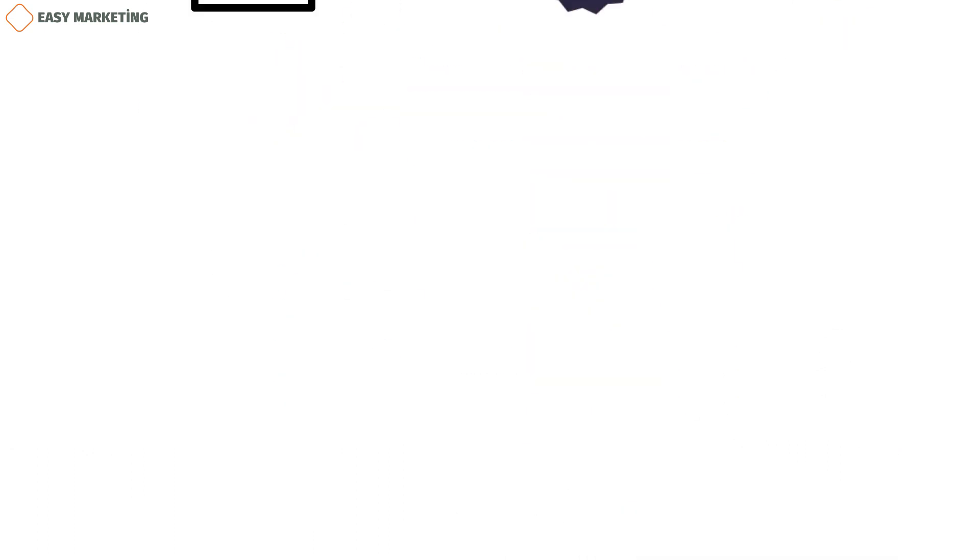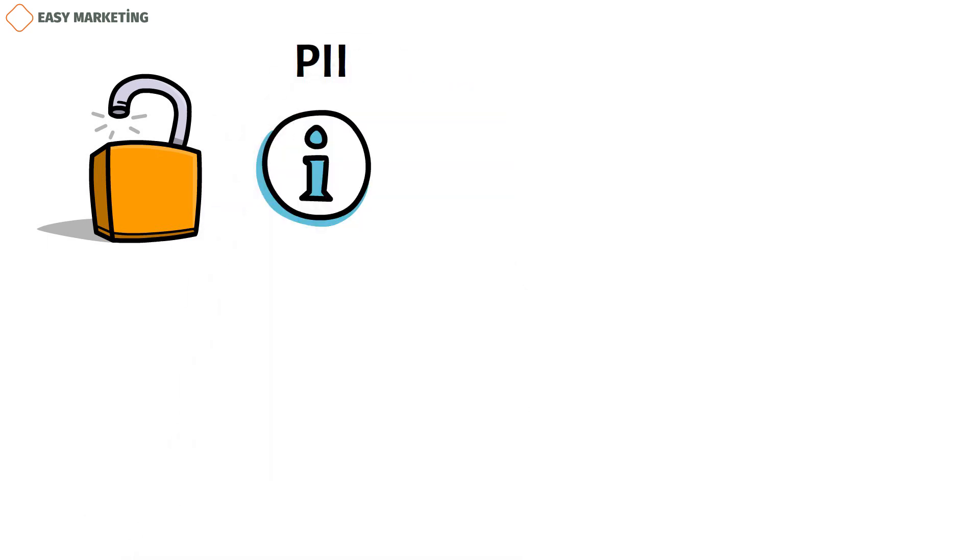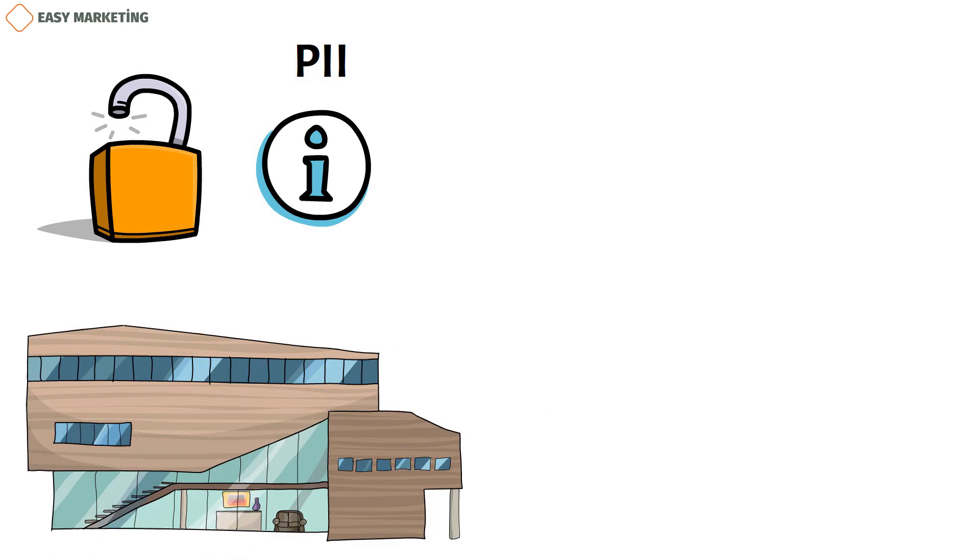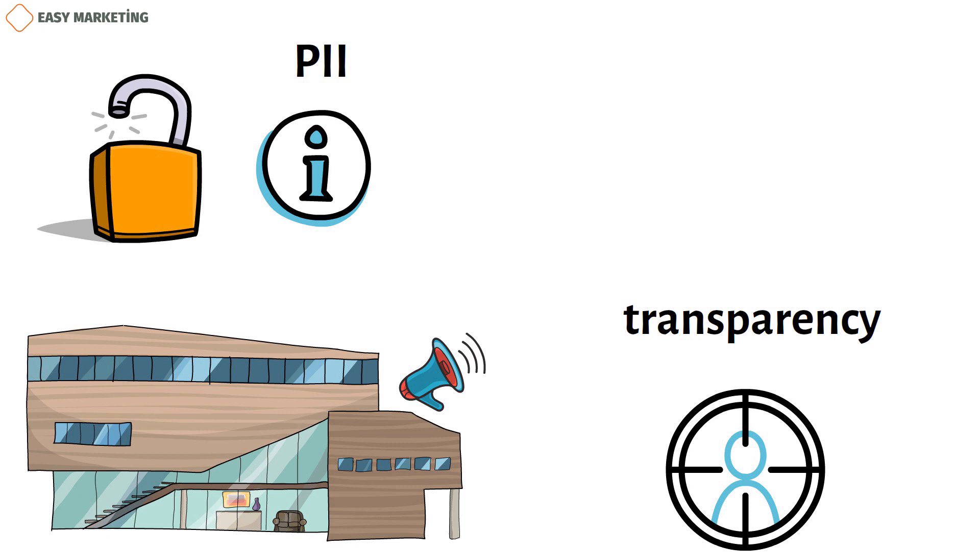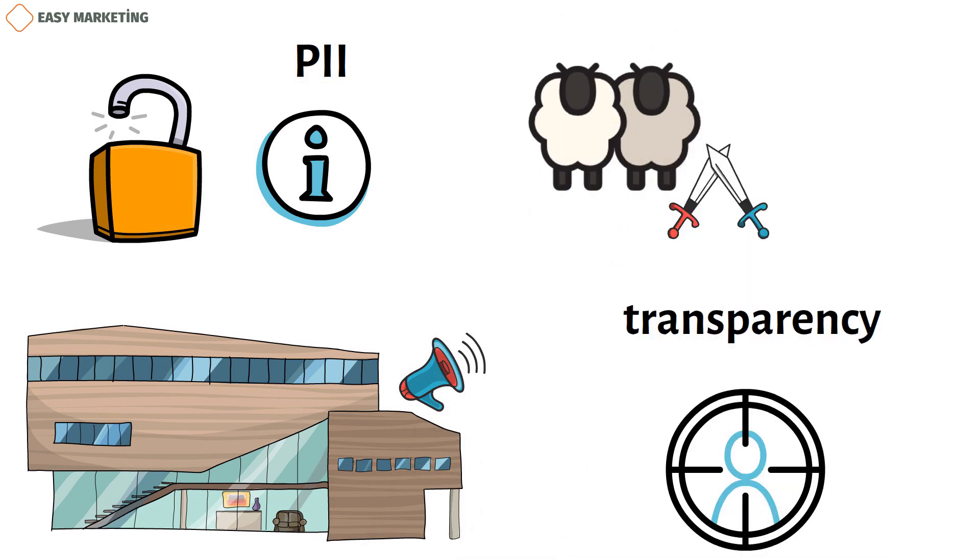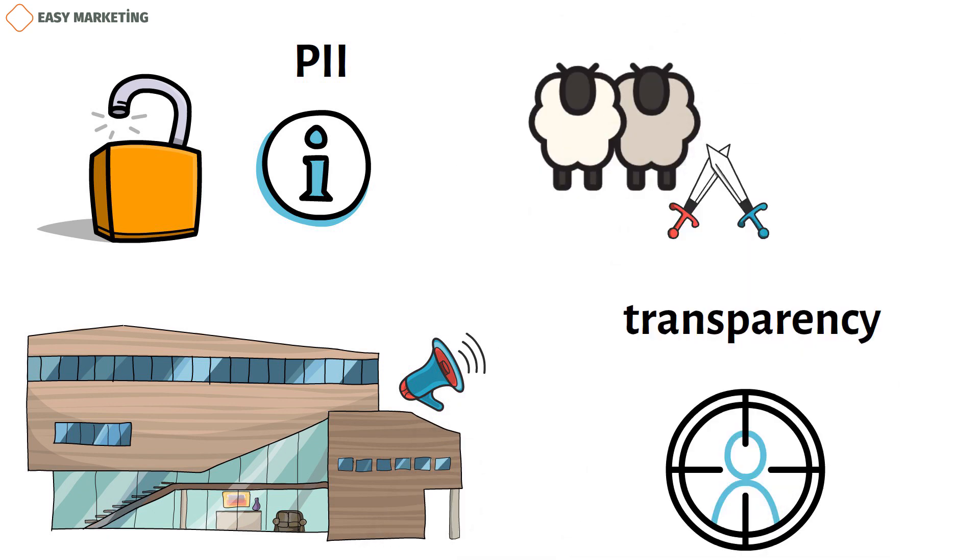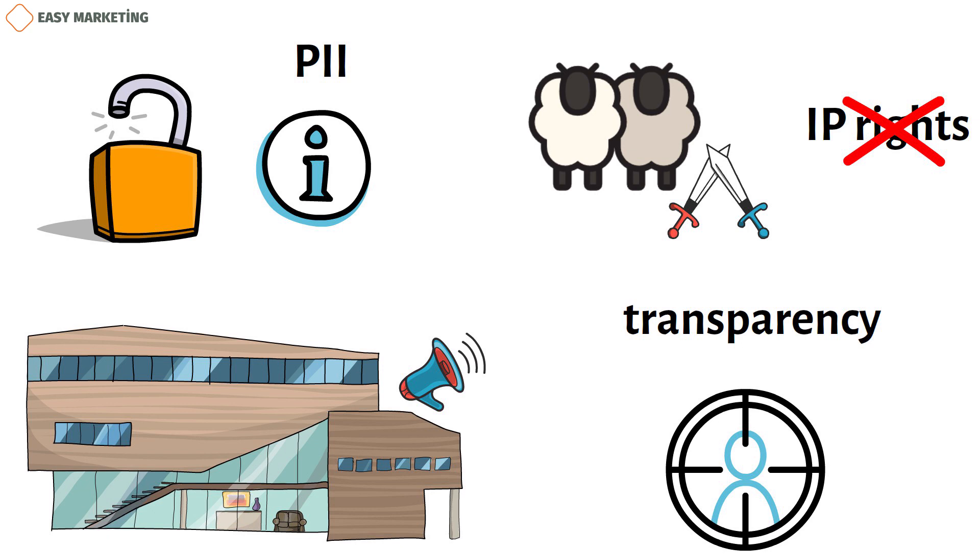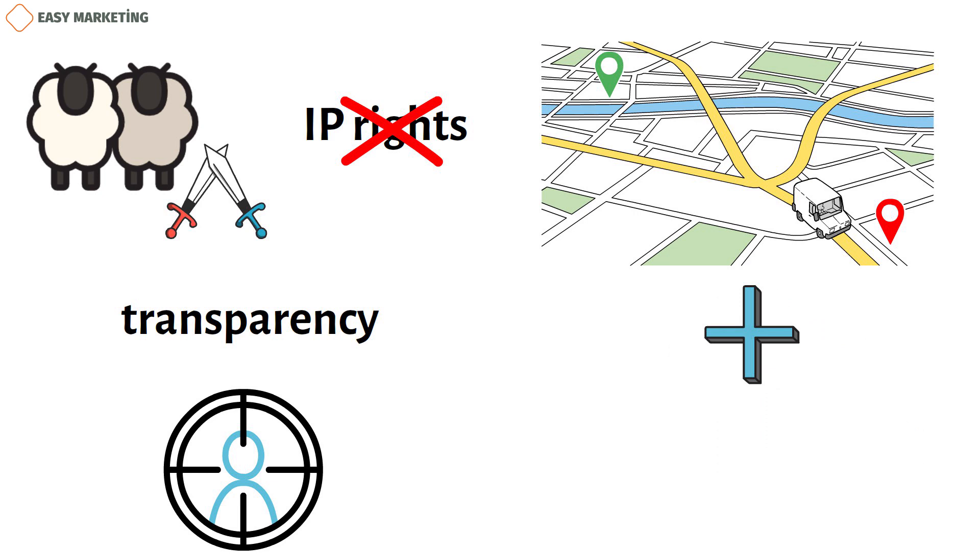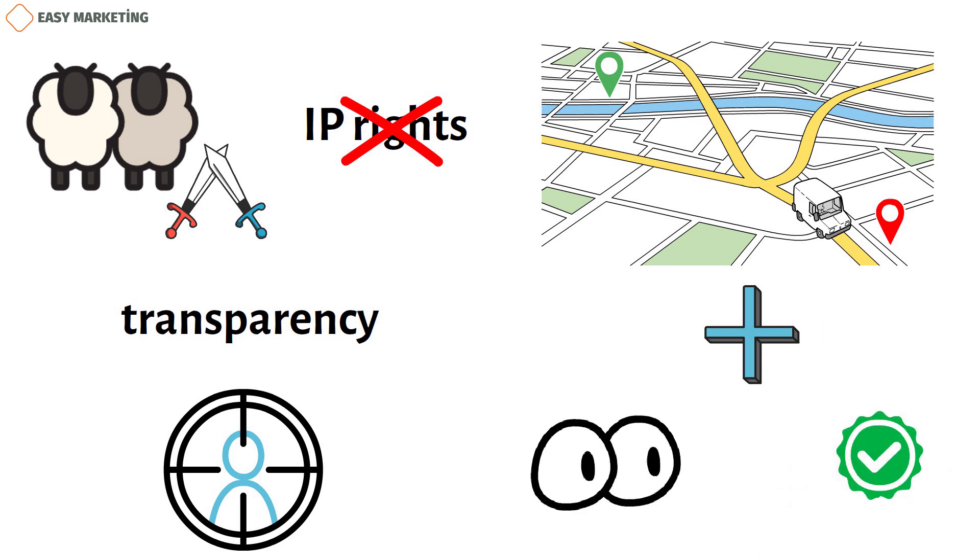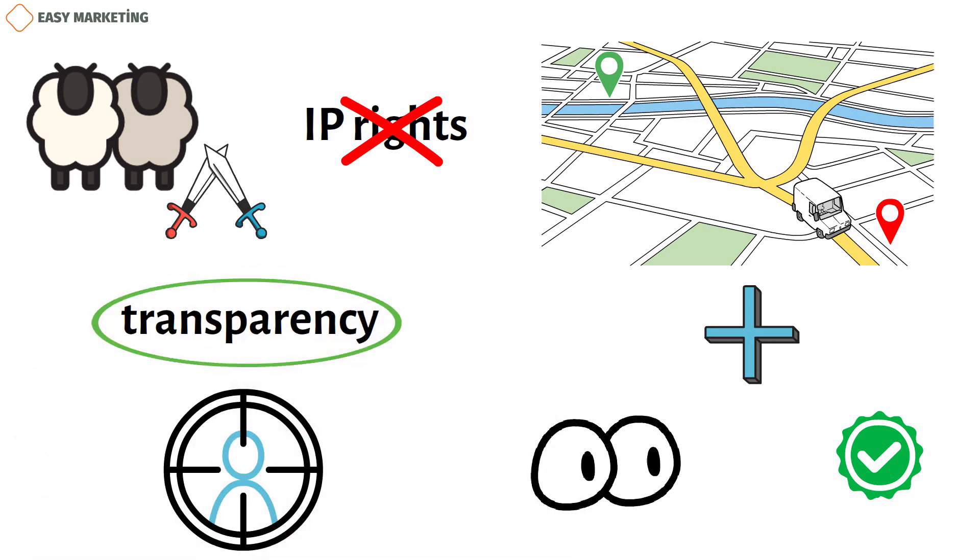When consumers are required to disclose their personally identifiable information, or PII, a trustworthy blockchain marketing company will strive to create transparency that is consumer-centric. Blockchain can help increase trust and transparency by combating deceptive marketing for replica goods that violate the intellectual property, IP, rights of original manufacturers. Moreover, end-to-end product traceability combined with improved visibility and the capacity to verify compliance responsibilities may result in greater transparency into how a corporation operates.